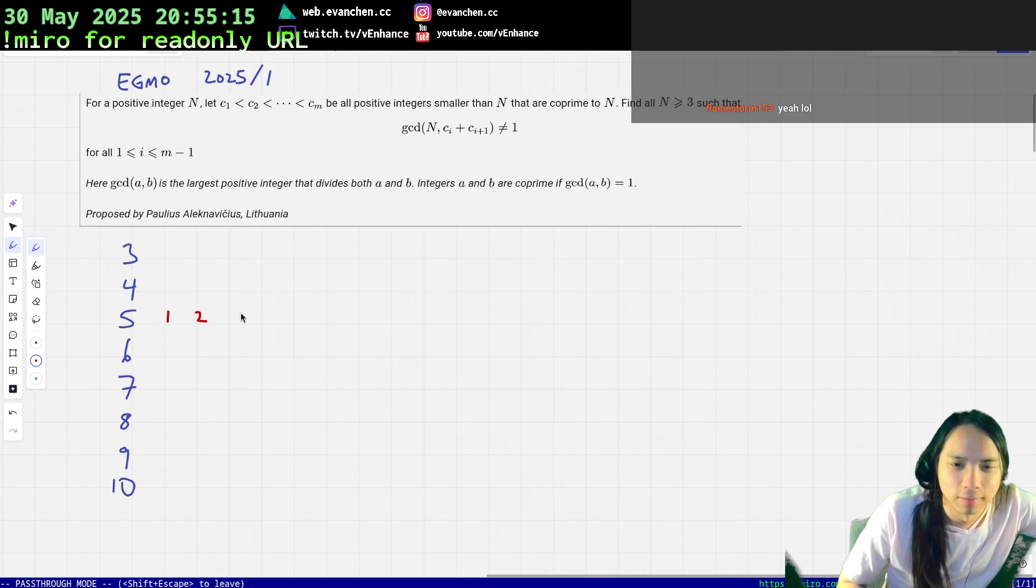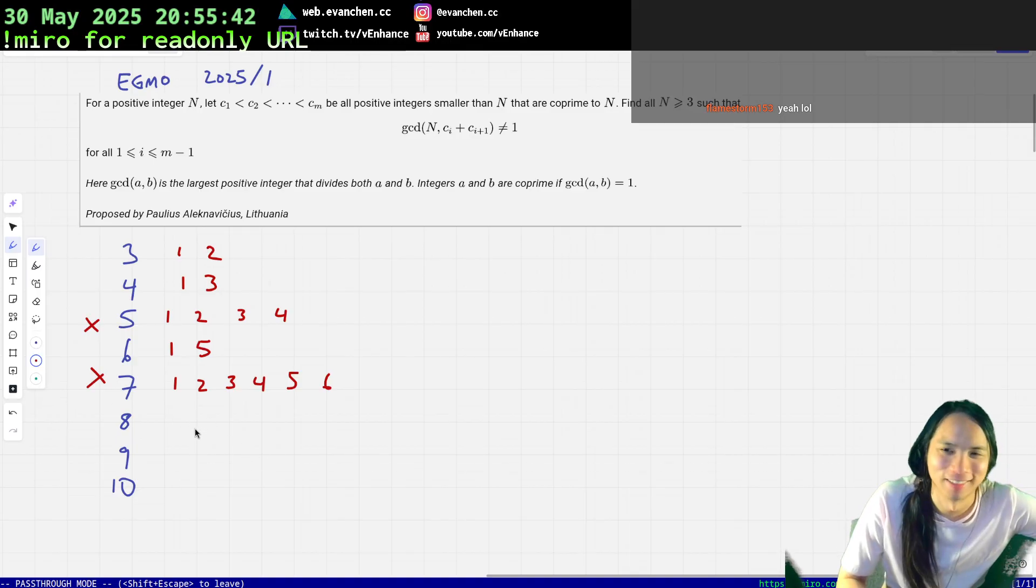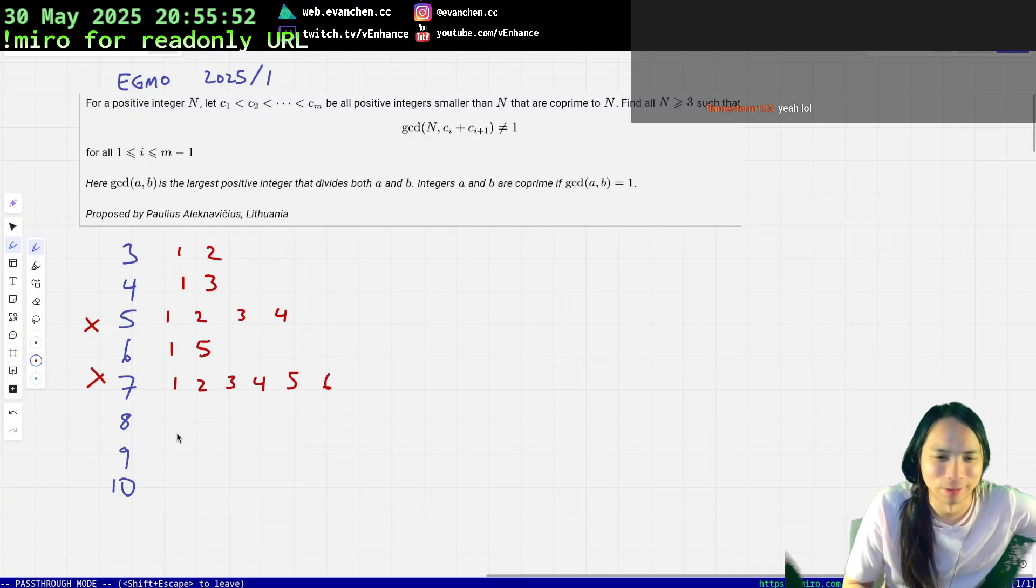Alright, one, two... one, five... so three and six work but they kind of feel exceptional. One, three works, or actually that's kind of... okay, this doesn't work. In general if I have an odd number that isn't a multiple of three, I think you just die. Like I think you actually just die in general.